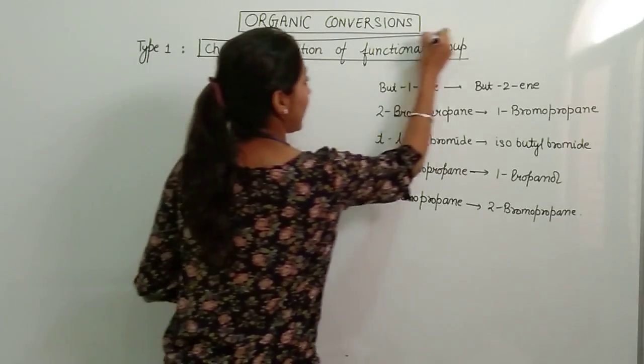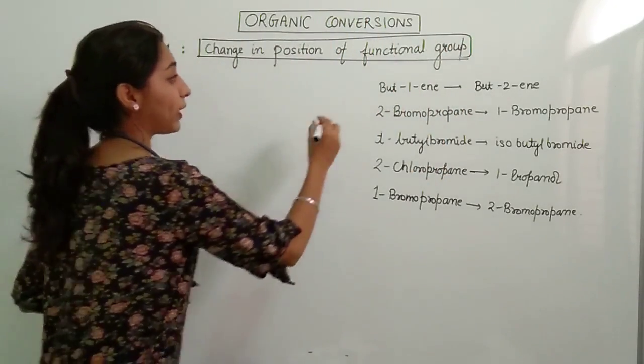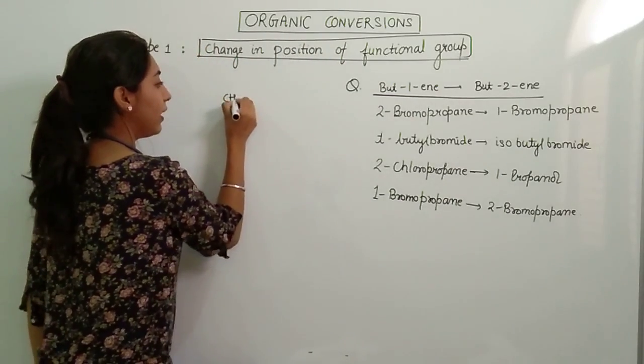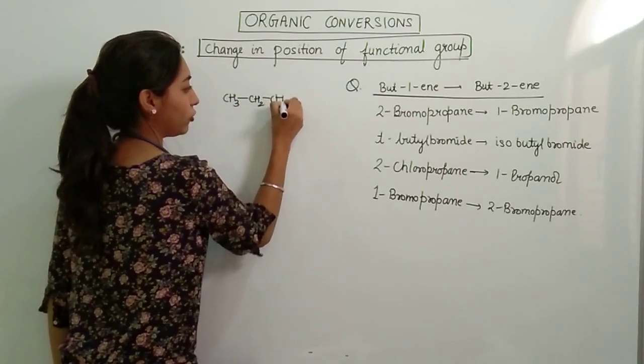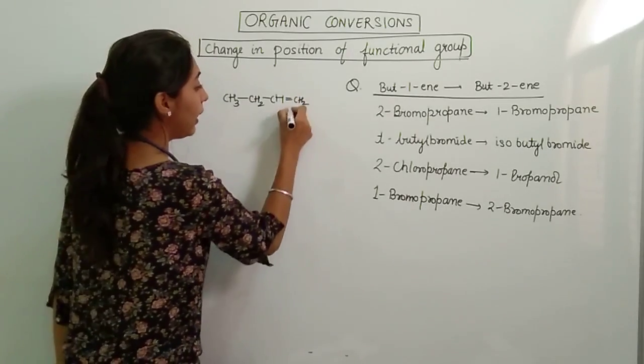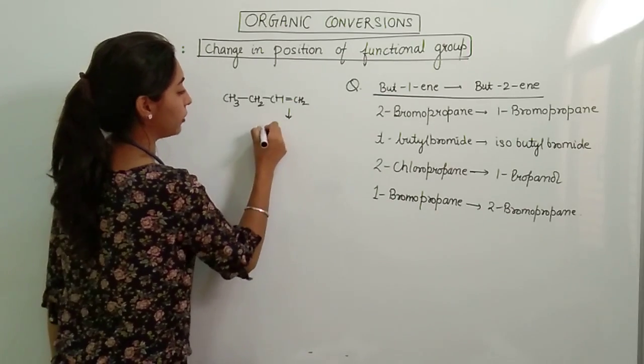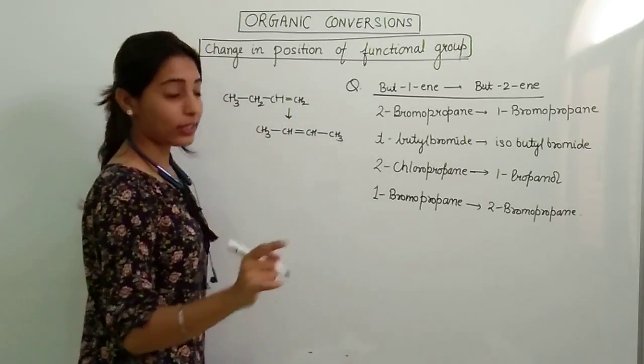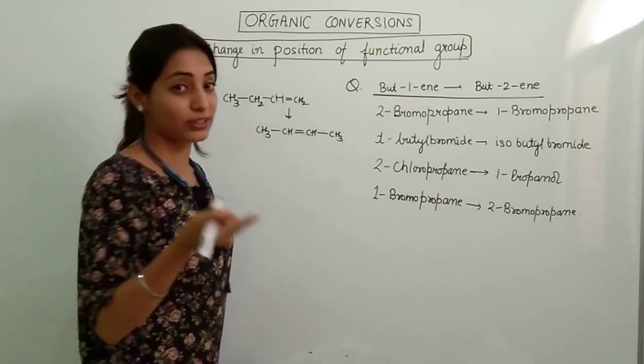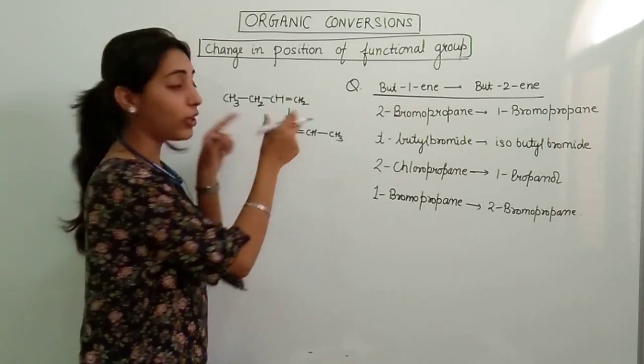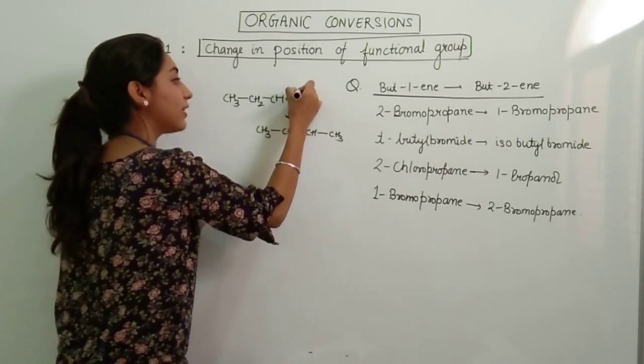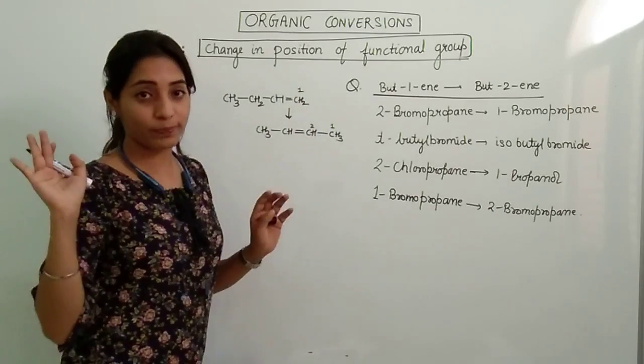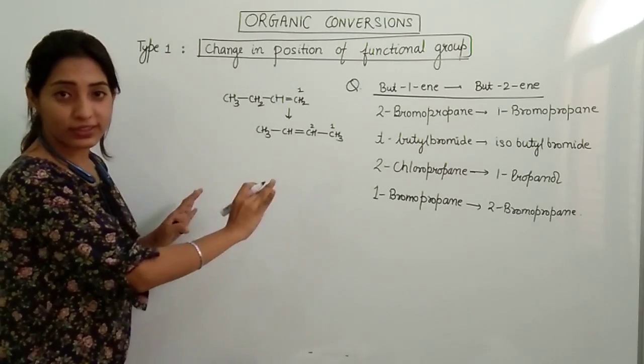So the topic is change in position of functional group. If I give you one example, this is a question: But-1-ene to But-2-ene. Let me first draw the structure. We have CH3-CH2-CH=CH2, so that is But-1-ene and we have to convert into But-2-ene which is CH3-CH=CH-CH3. Now see carefully why I am including this question in the type where there is a change in position of functional group. The only functional group present in this molecule is a double bond.